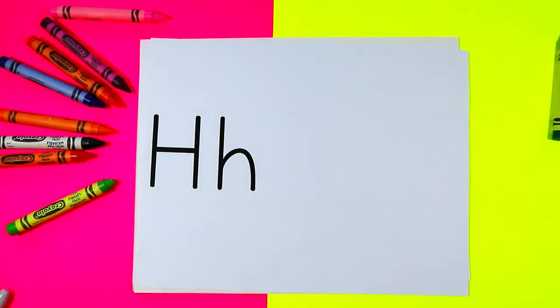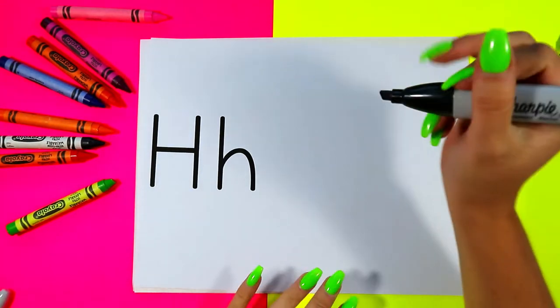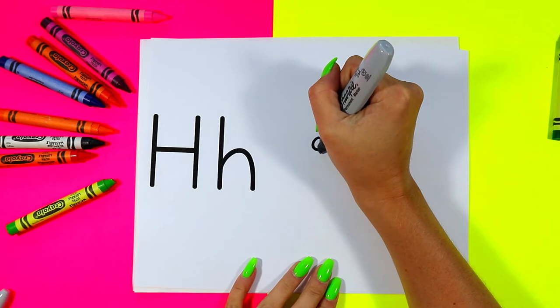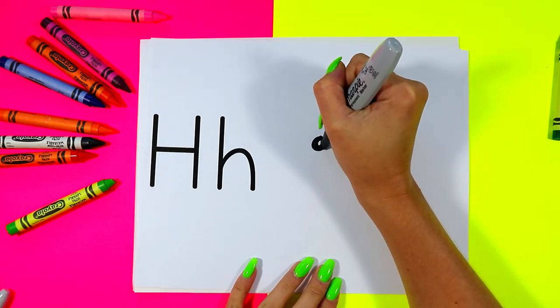Alright we're going to begin our hamster drawing. First we're going to draw a circle for the hamster's eye.